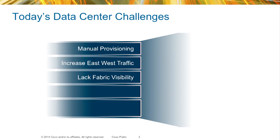Lack of fabric visibility is another challenge. Everybody's going through virtualization, and one of the key problems people have today is actually figuring out where their virtual machines are. Unlike physical hosts in the past where you bolt them down and they never move, today with load balancing and v-motion, a virtual machine could be here today and in a different part of the network tomorrow. The lack of visibility into this is causing a lot of problems for data center admins today.